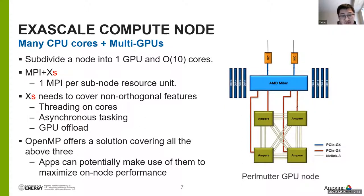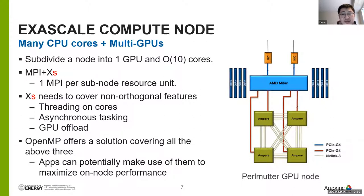OpenMP is one of the solutions offering complete support of all three features: threading, tasking, and GPU acceleration. Applications can potentially select all of them or a subset based on their needs to maximize code performance.